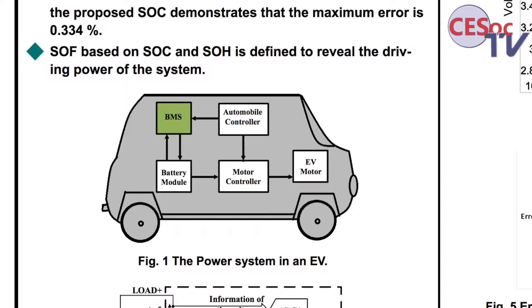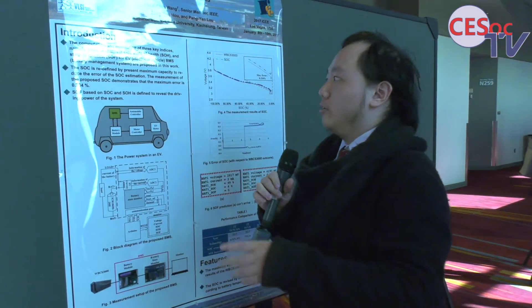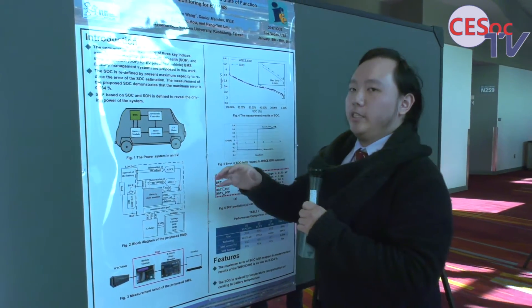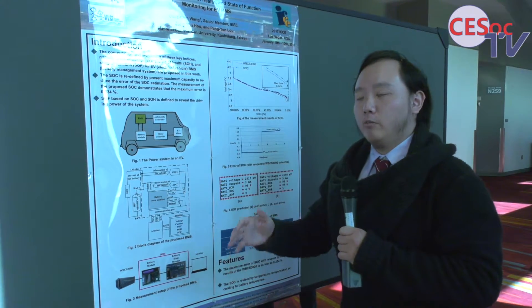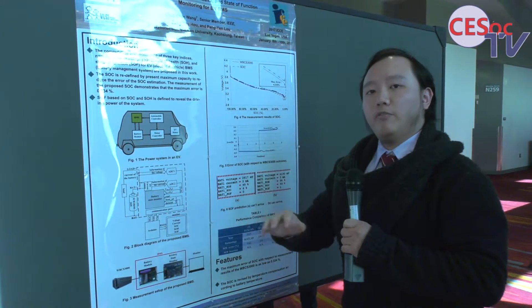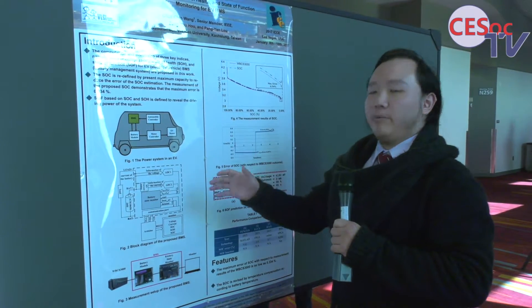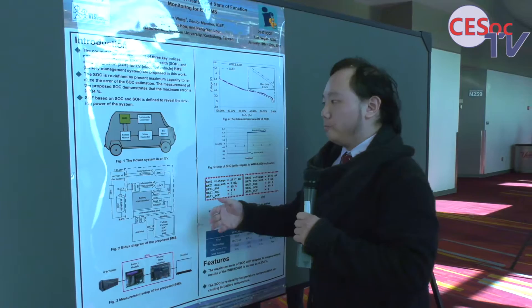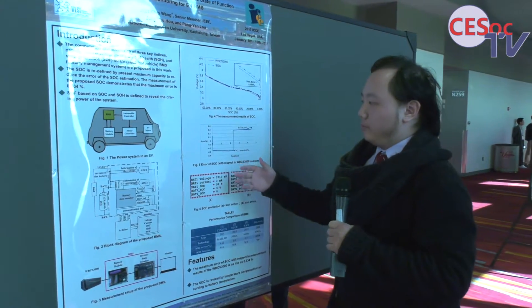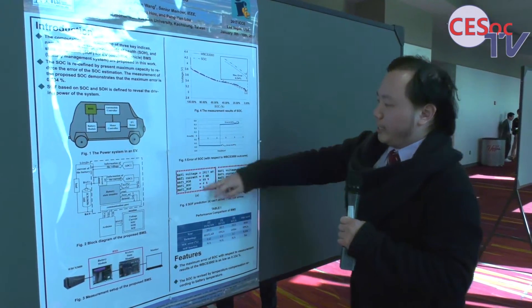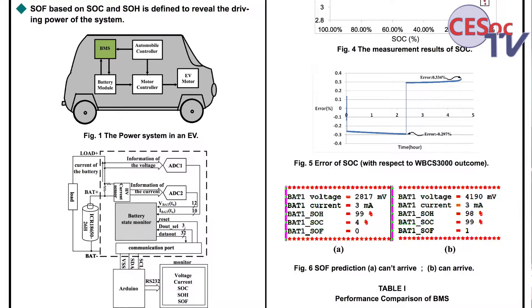We can predict whether we can drive the car or not in an EV, because sometimes our battery is not healthy and we don't have enough capability to drive. We use this picture to show the low power battery and the full power battery, and whether it can work or not.